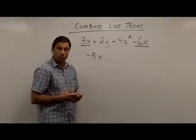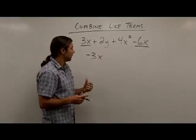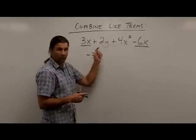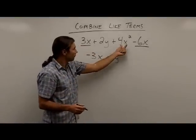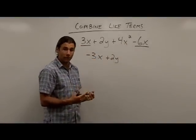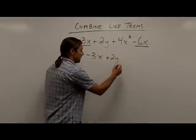What I'm going to do with the rest of the terms in the expression is I'm just going to bring those down. So the 2y couldn't be combined with anything, so I'm just going to bring that down as plus 2y. The 4x squared couldn't be combined with anything, so I'm just going to bring that term down.